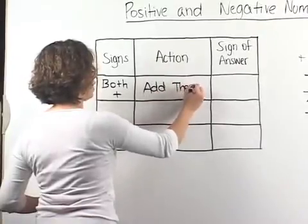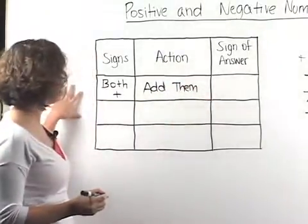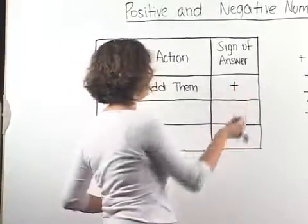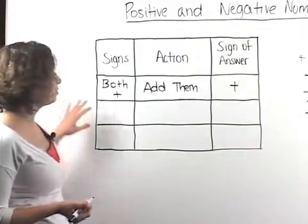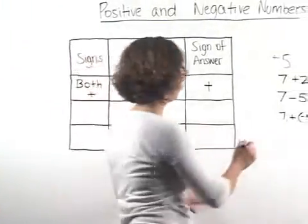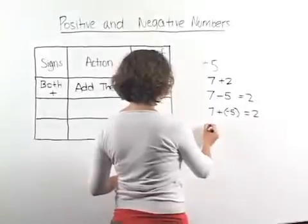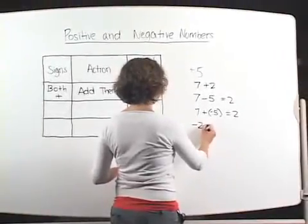Now when we add two positive numbers, the answer is going to be positive. Now if both of the signs are negative, so let's say we have negative two minus